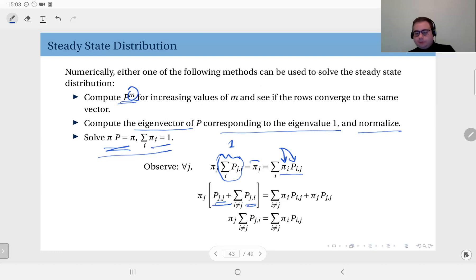Partition this sum into the components where i and j are different, and also the one where they are equal, in which case you have πⱼ times pⱼⱼ.